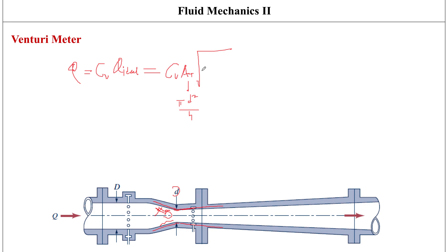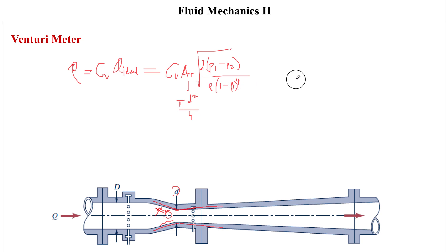This is multiplied by the square root of 2(p₁ − p₂) divided by ρ(1 − β⁴), where ρ is the fluid density. Beta β is the diameter ratio — the throat-to-pipe diameter ratio — equal to small d divided by capital D.